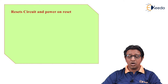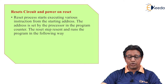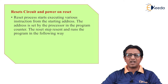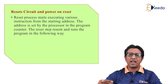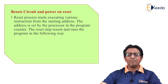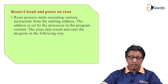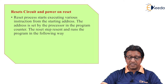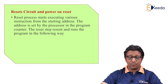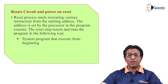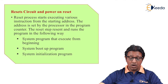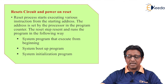The next is reset and power-on reset. The reset process starts executing instructions from a starting address. When the system starts, it begins at a fixed address where an initialization or boot program is written. Reset can be done in two ways: resetting a working system, or getting reset when power is turned on — one is the reset circuit and the other is the power-on reset circuit. The address is set by the processor's program counter, and the reset step runs the system initialization or boot-up program from the beginning.